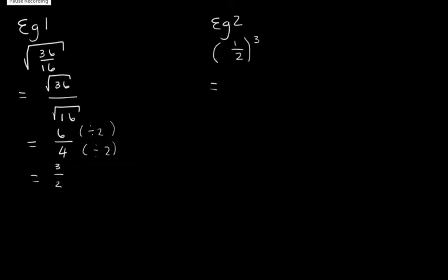Let's look at our next example. We have one half cubed. It means that we need to multiply one half by itself 3 times. So we have one half times one half times one half. When we are multiplying fractions, we multiply numerator times numerator and denominator times denominator. 1 times 1 times 1 is 1, and 2 times 2 times 2 is 8, giving us 1 over 8.